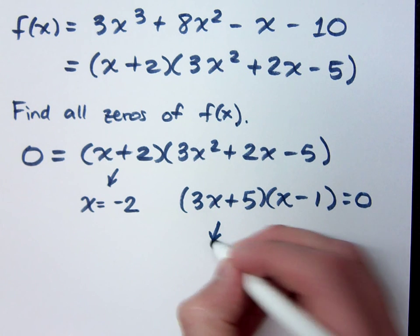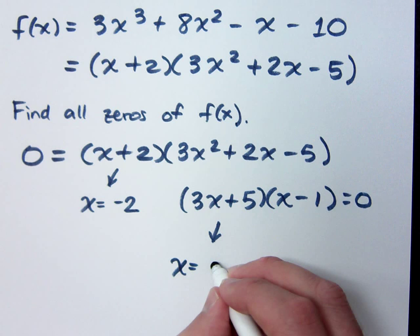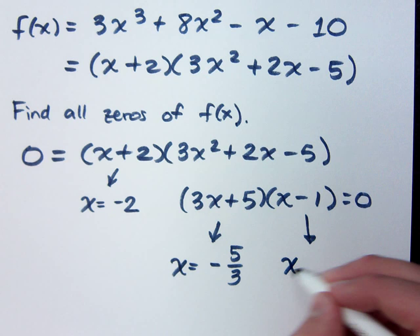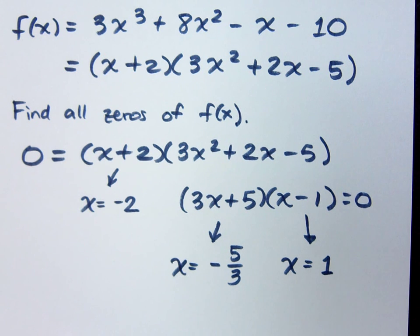Which means x equals what? Negative 5 thirds. And x equals what? x equals 1.